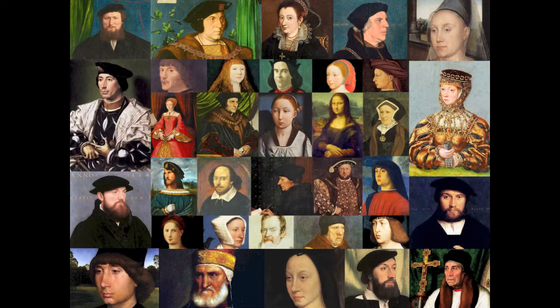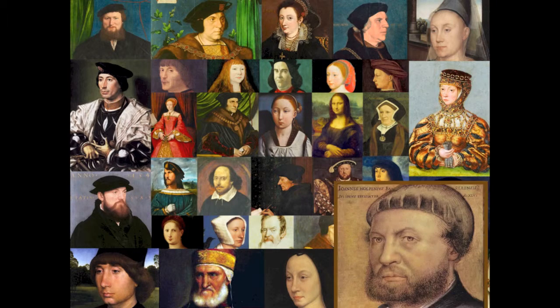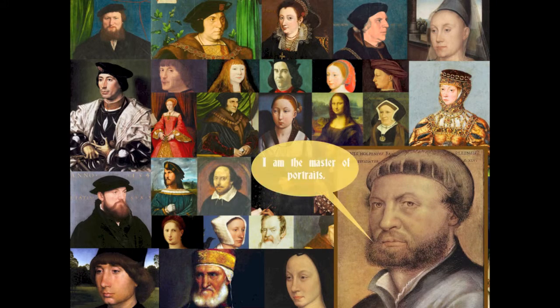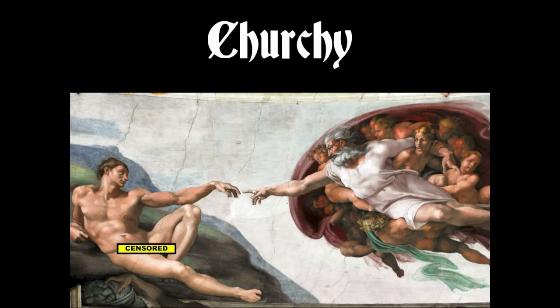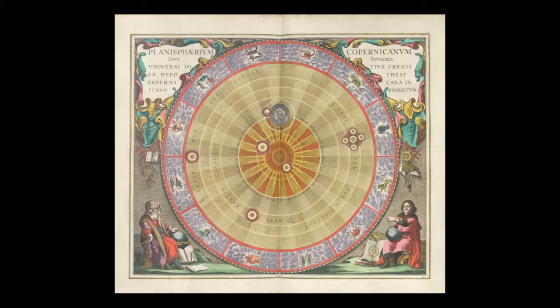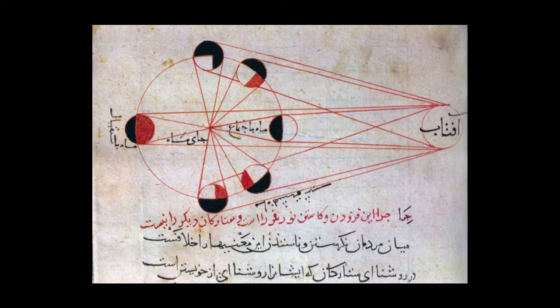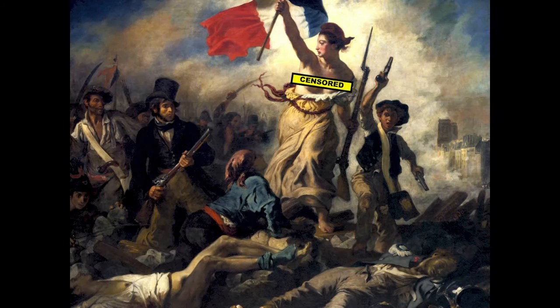Seriously, that's a lot of portraits, a majority of which were painted by none other than Hans Holbein the Younger. This brings us to the Age of Enlightenment, where art went from being churchy to secular — it was used for the spreading of knowledge and commemoration of events.